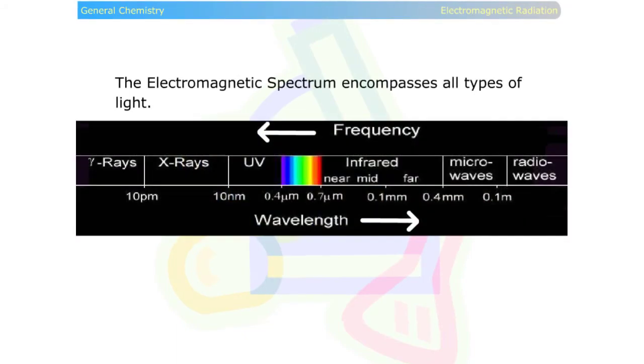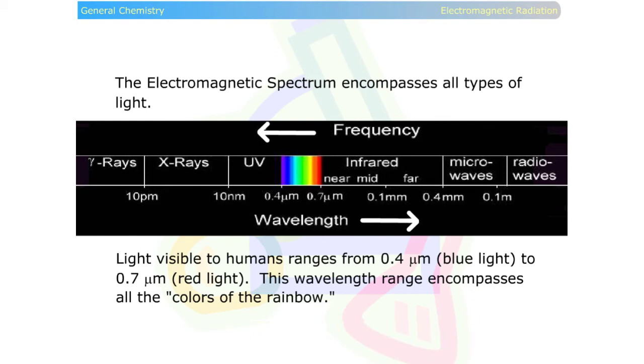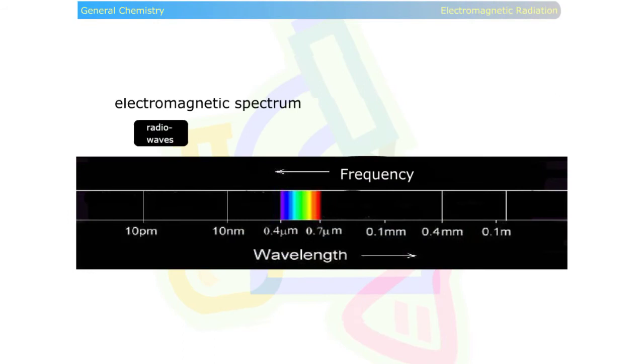The electromagnetic spectrum. The electromagnetic spectrum encompasses all types of light. Light visible to humans ranges from 0.4 micrometers to 0.7 micrometers. This wavelength range encompasses all of the colors of the rainbow.